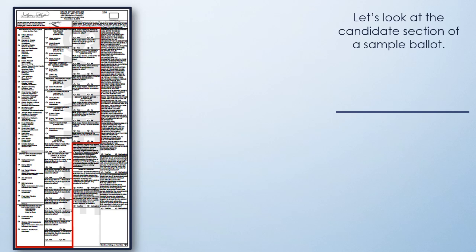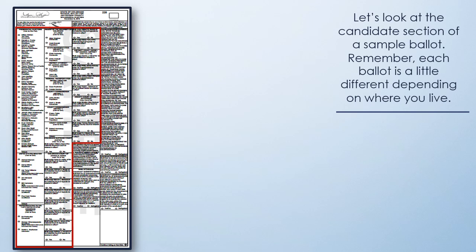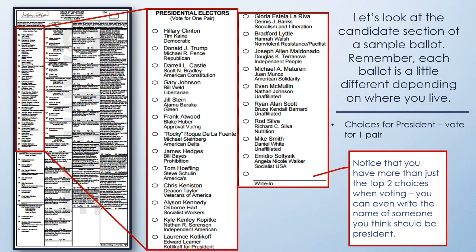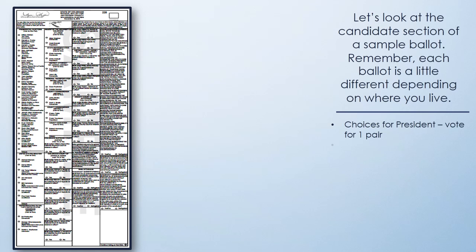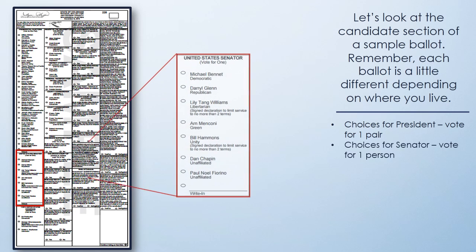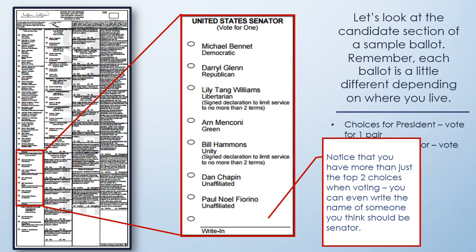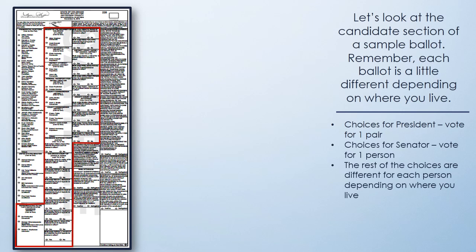Let's look at the Candidates section of a sample ballot. Remember, each ballot is a little different depending on where you live. Notice that you have more than just the top two choices when voting — you can even write in the name of someone you think should be president. You will vote for one person. You can also write in the name of someone you think should be senator. The rest of the choices are different for each person depending on where you live.